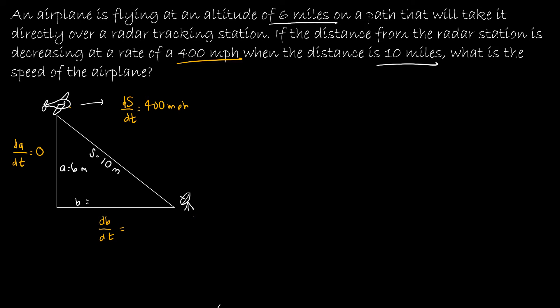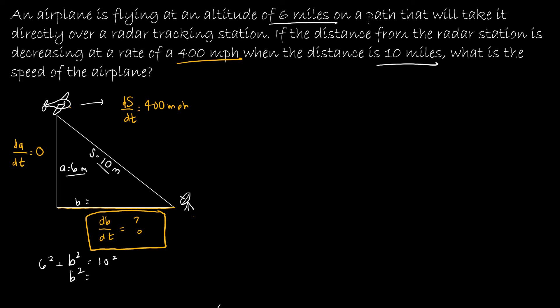What is the speed of the airplane? The speed of the airplane would be the change in the B value — dB/dt. Now I know A is 6 and S is 10, but I need B. I can use 6² + B² = 10² to solve for B. So B² equals 10² minus 6², which is 100 minus 36, which gives me 64, which means B is 8. I only need the positive value. Now I'm ready to solve.